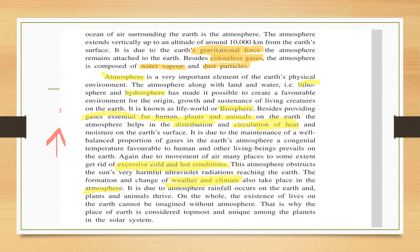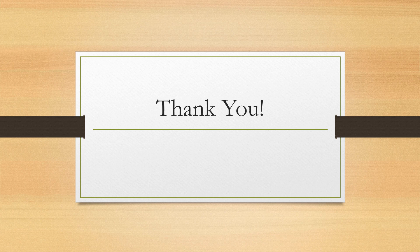Rainfall occurs because of the atmosphere. On the whole, the existence of life on the earth cannot be imagined without the atmosphere. That is why Earth is considered topmost and unique among the planets in the solar system. Atmosphere, lithosphere, and hydrosphere work in harmony to create life conditions on this planet, not found in any other planet of the solar system. Thank you — I hope this introduction part is clear. See you in the next class.